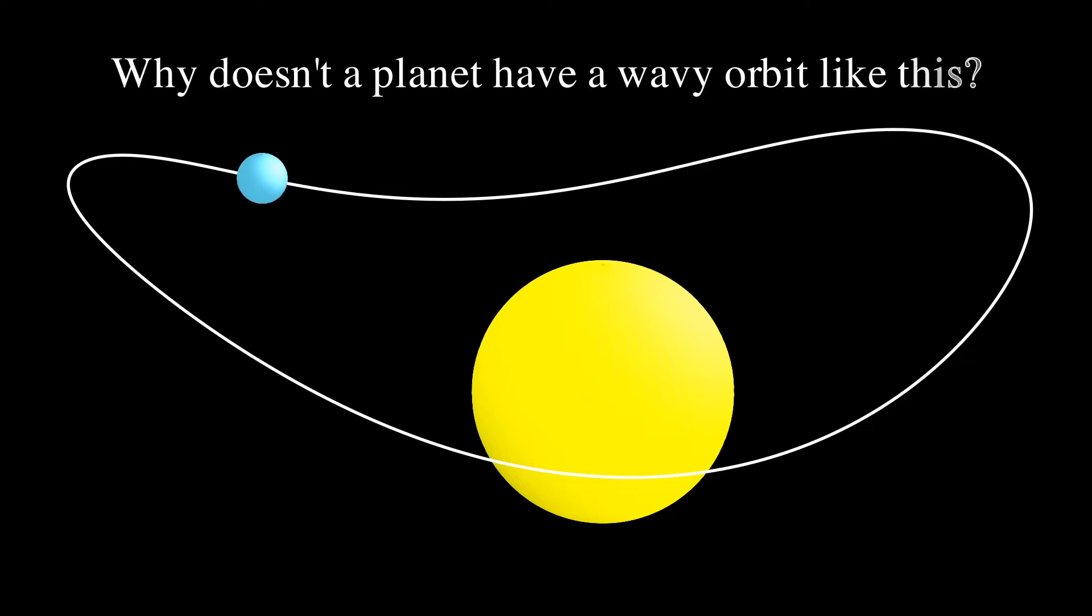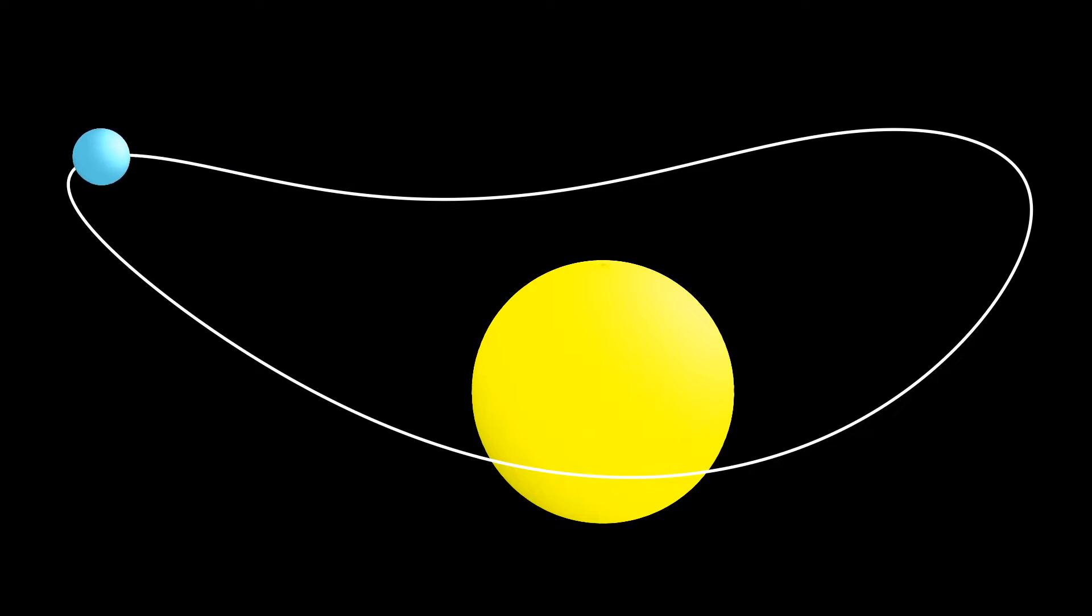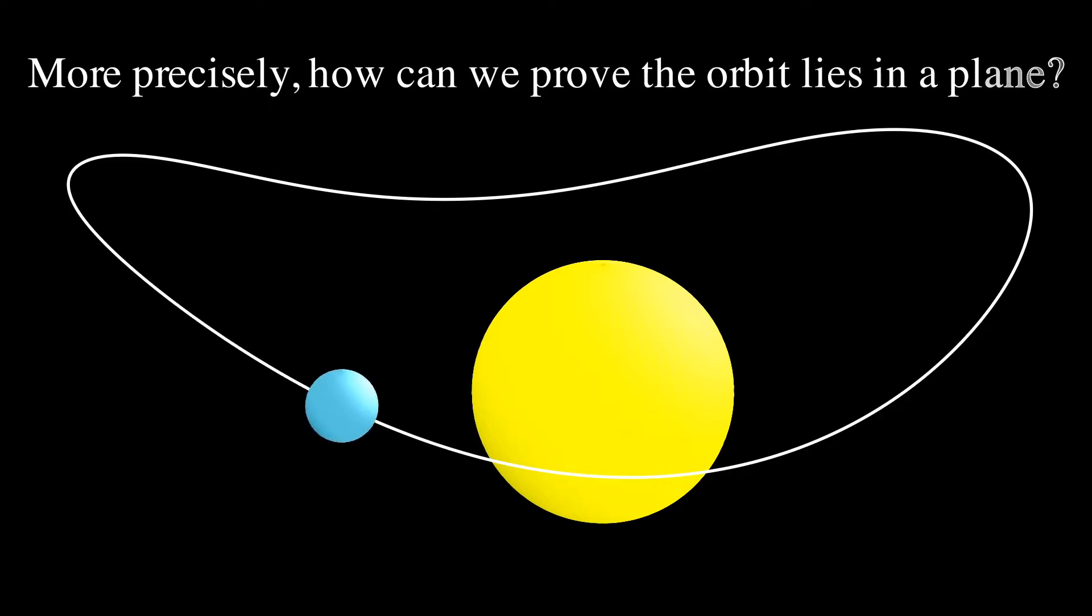How come a planet doesn't have a wavy orbit like this? More precisely, how can we prove that the planet lies in a plane?